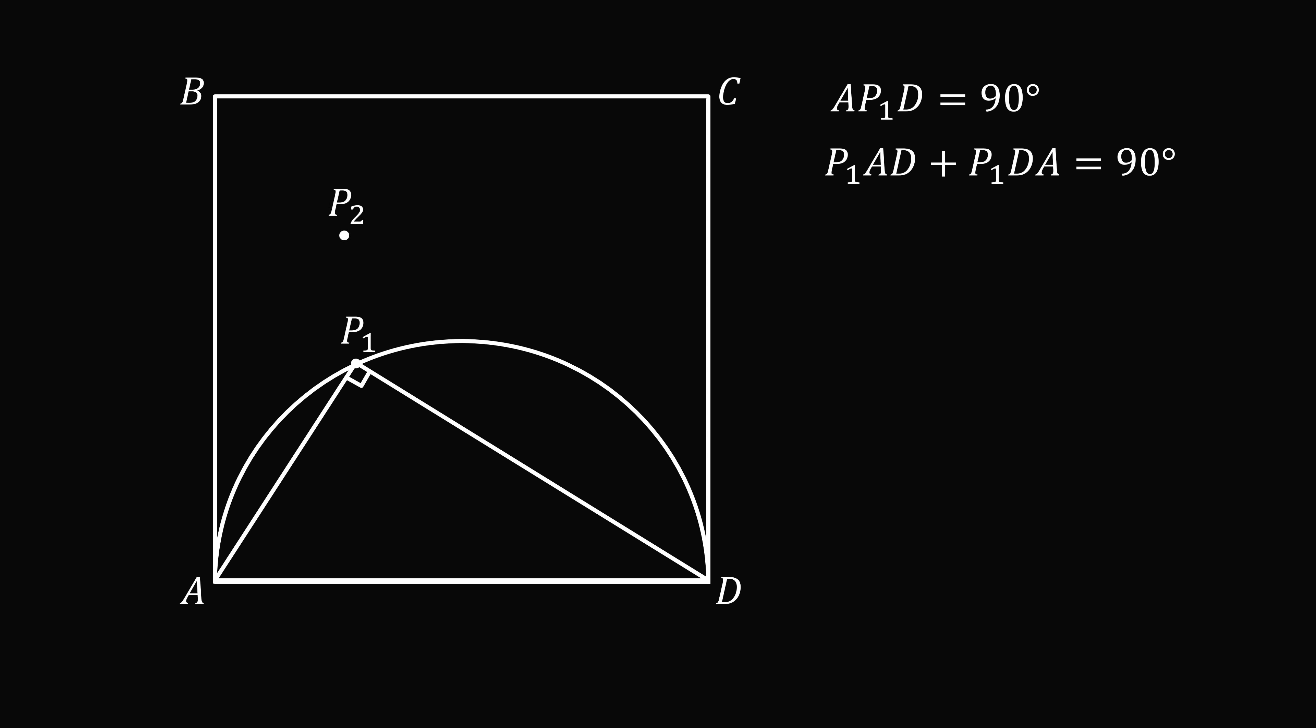Now let's consider P₂ that's in the exterior of the semicircle, but in the interior of the square. Now look at this diagram AP₂D. Now P₂AD is greater than P₁AD and P₂DA is greater than P₁DA. So the sum of these two angles will be larger than 90 degrees.